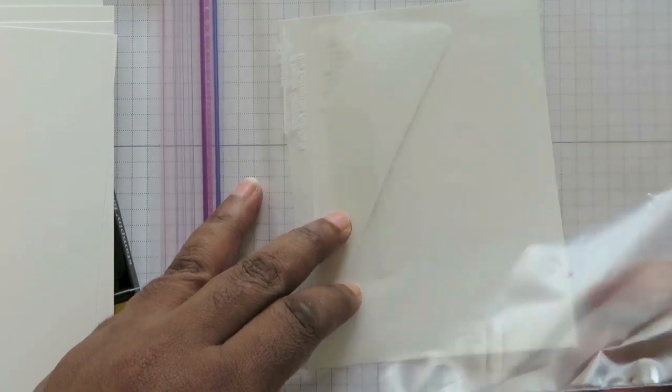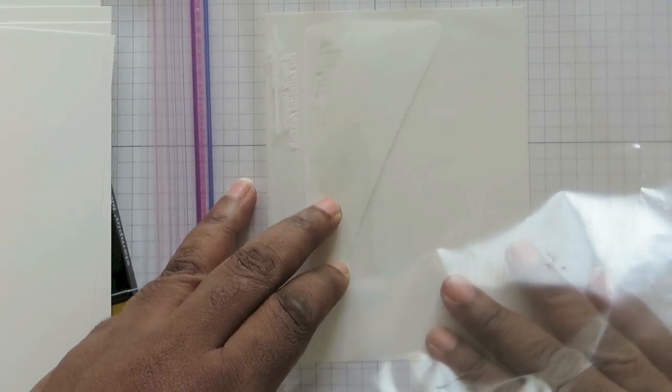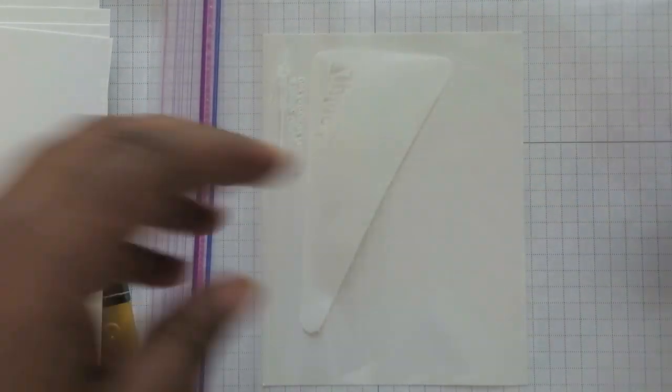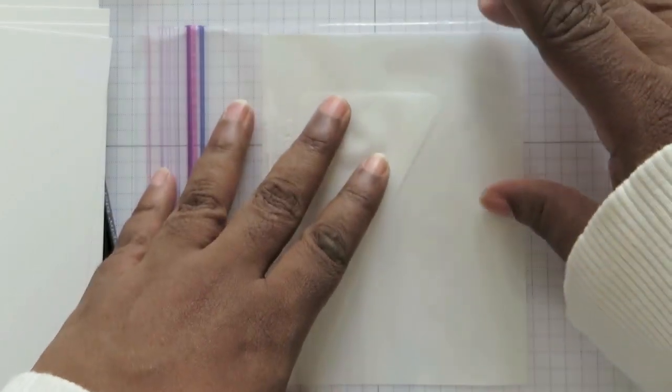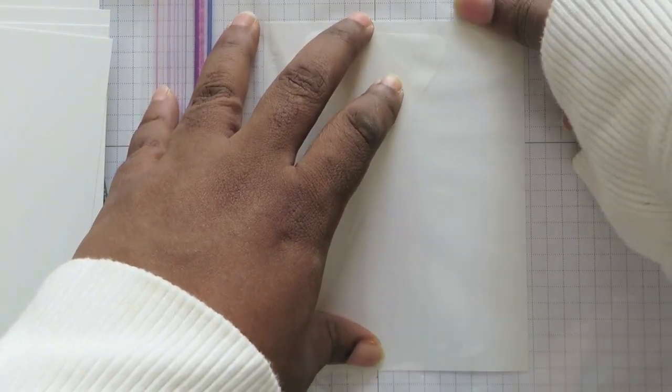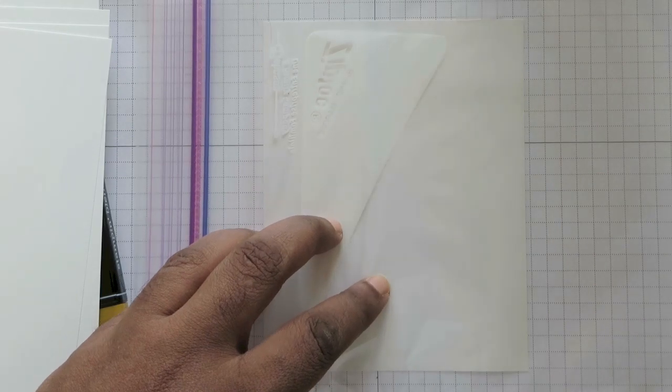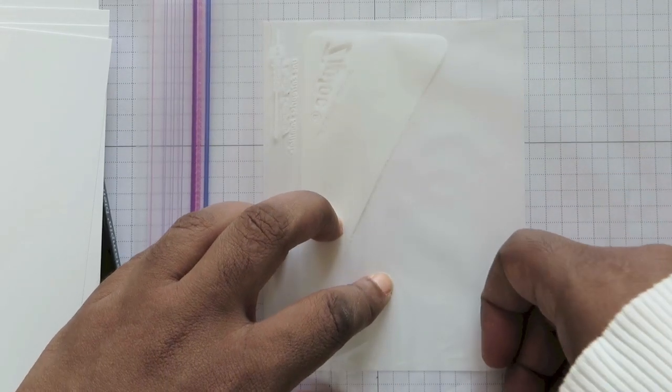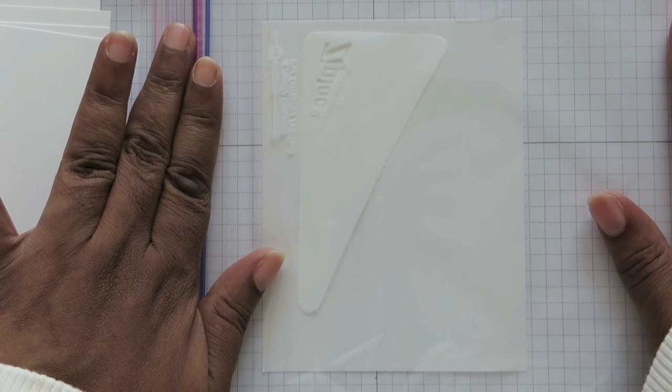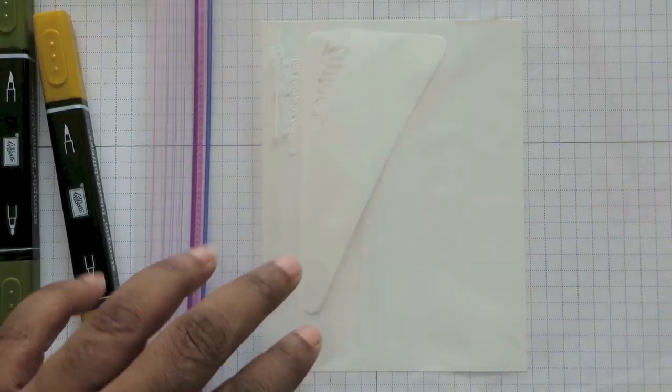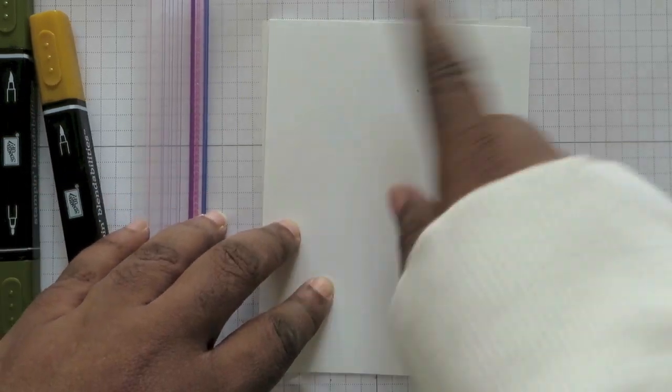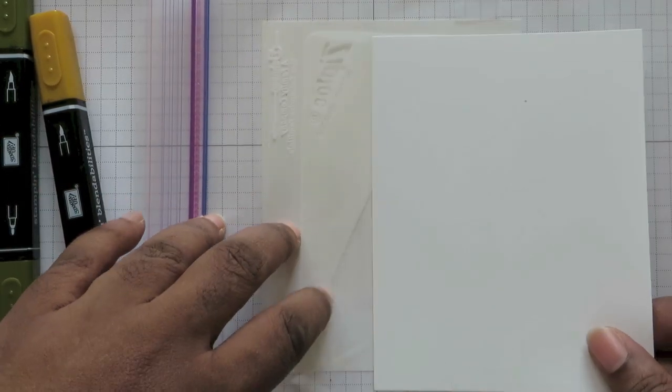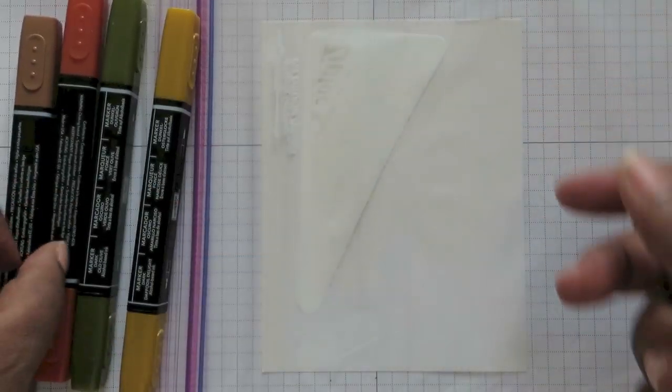I'm going to start by taking one of my glossy cardstocks cut down to the size of your card front and I'm going to put it under the Ziploc bag. And all that does for me is help me to kind of keep track of where I need to cover, what amount of space I need to cover. And I'm just taking a little bit of removable tape and just securing everything down. Okay, so let's get started.